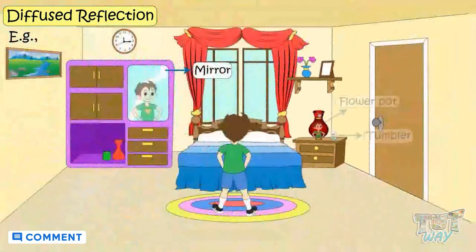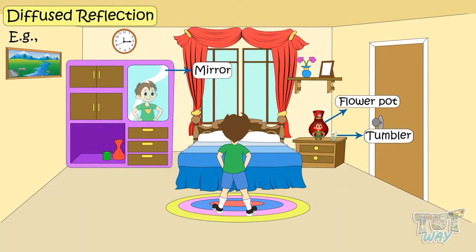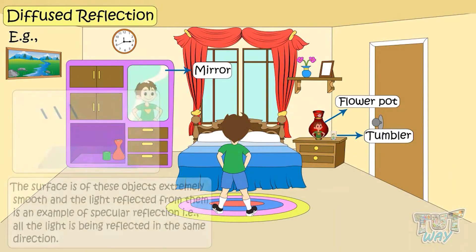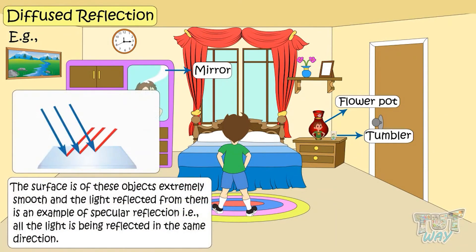Because these three things — this pot, this tumbler, and this mirror — the surface is extremely smooth. And the light reflected from them is an example of specular reflection. That is, all the light is being reflected in the same direction.